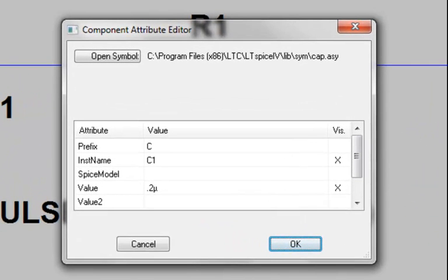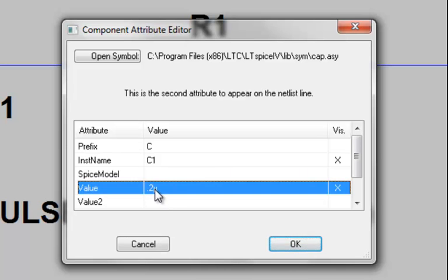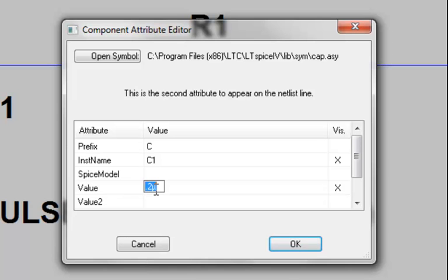That allows us now to edit the component attributes for that capacitor, and we're now going to go and replace the value of 0.2 micro with a user-defined variable, which in this case I've selected x, and we need to bracket it with the curly braces.